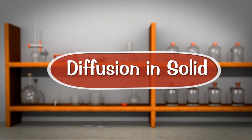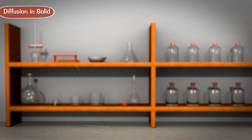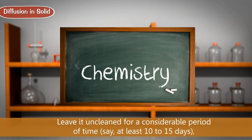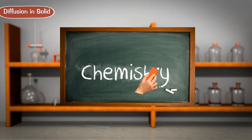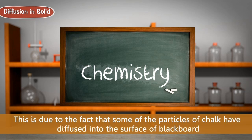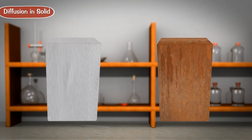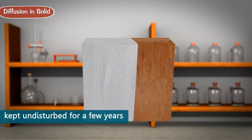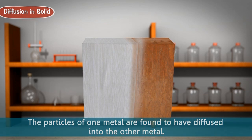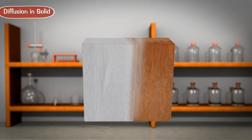Diffusion can also take place in solids, and it is a very very slow process. For example, if we write on a blackboard and leave it uncleaned for a considerable period of time, it becomes quite difficult to clean afterwards, because some particles of chalk have diffused into the surface of the blackboard. Also, if two metal blocks are bound together tightly and kept undisturbed for a few years, the particles of one metal are found to have diffused into the other metal. Diffusion in solids is so slow that many people think it does not take place in solids at all.